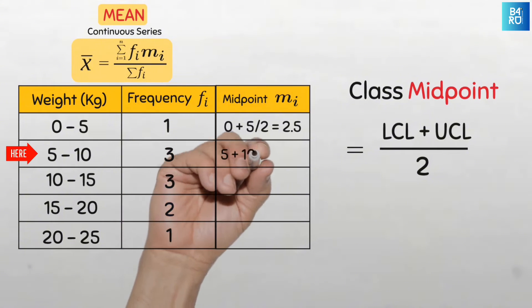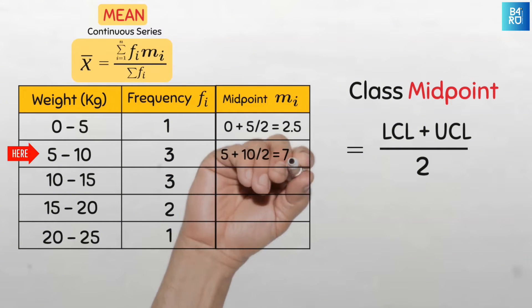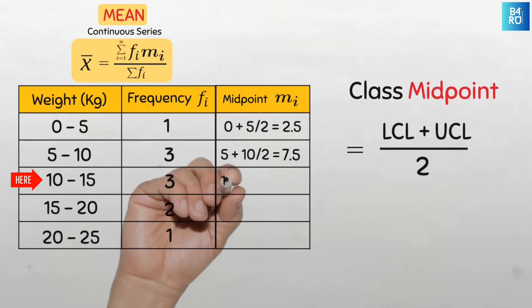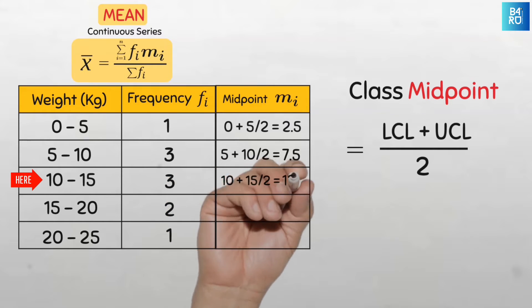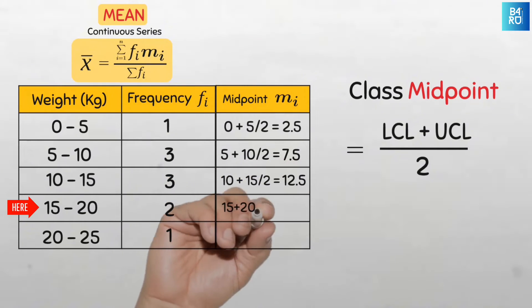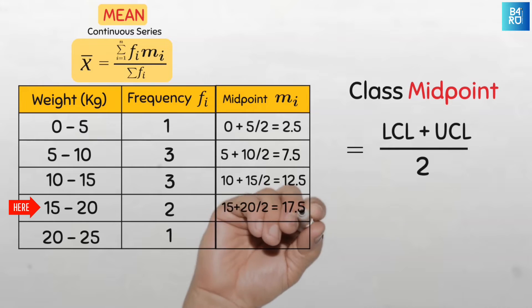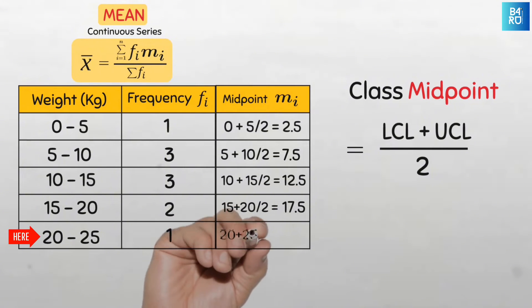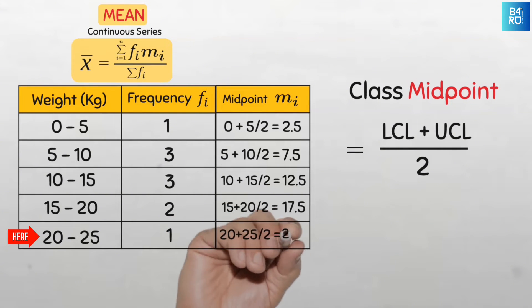For the second, it is 5 plus 10 all divided by 2 and that's 7.5. Next is 10 plus 15 all divided by 2 and that's 12.5. And then 15 plus 20 divided by 2 and that's 17.5. And lastly 20 plus 25 all divided by 2 and that's 22.5.